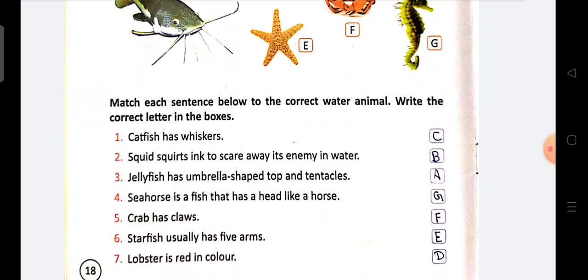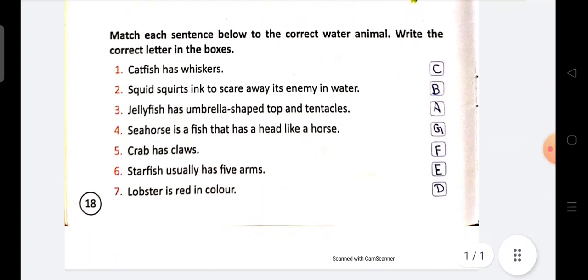Starfish usually has five arms. Starfish point number E. Dekhye beta. Iske five arms hootate hai. Starfish ke. Thik hai? Next and last.